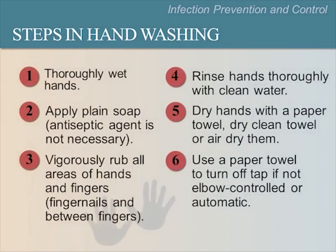The steps in proper hand washing begin with thoroughly wetting your hands. Next, apply plain soap and vigorously rub all areas of hands and fingers, including fingernails and between the fingers. Rinse hands thoroughly with clean water. Using liquid soap in a dispenser is preferred over bar soap. Then dry hands with a paper towel, a clean dry towel, or air dry them. Use a paper towel to turn off the tap, if not elbow-controlled or automatic.